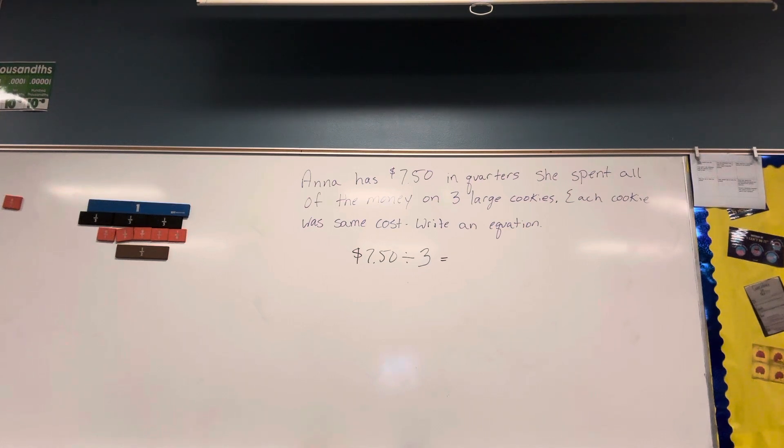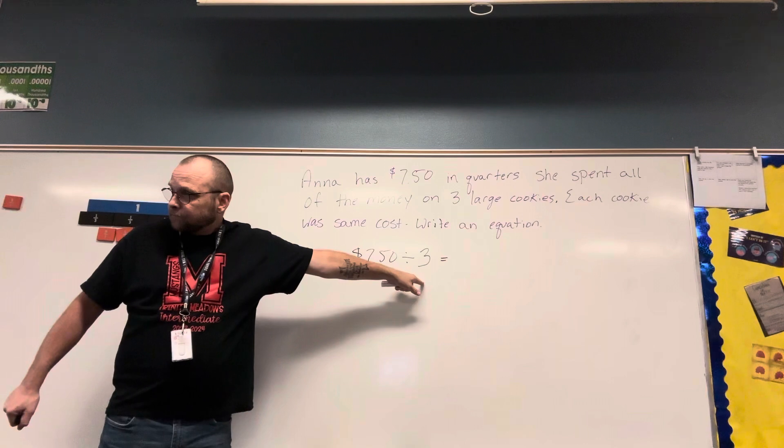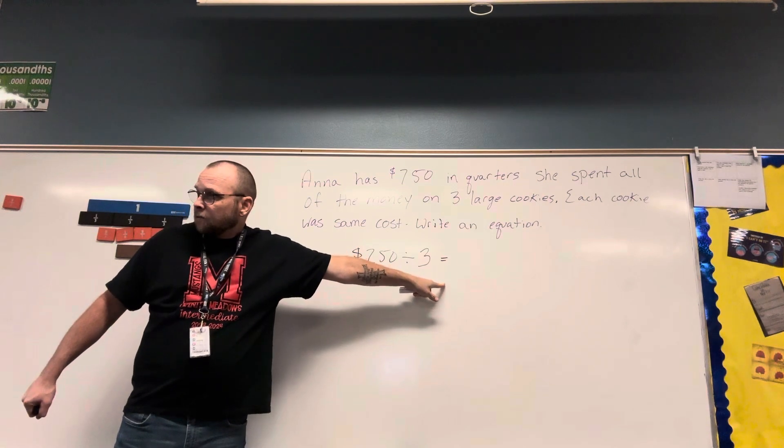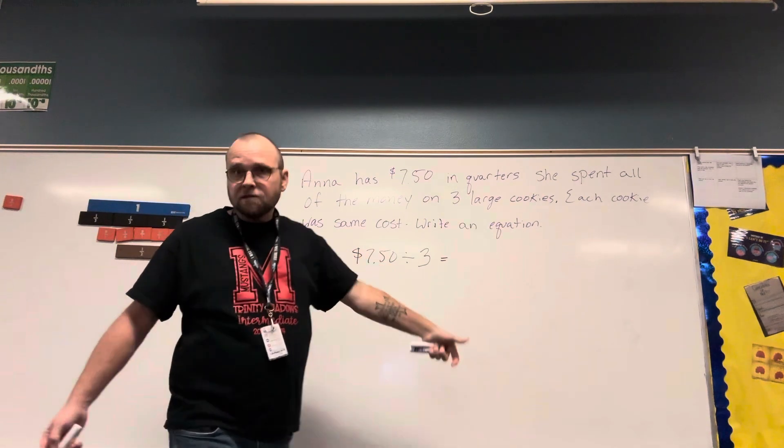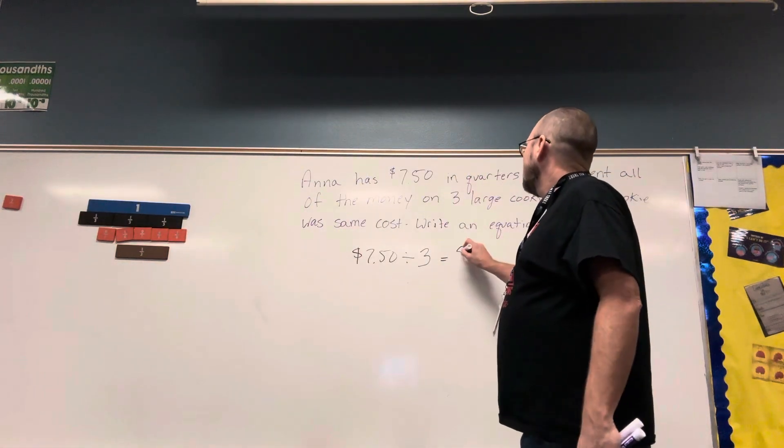We've eliminated three of them. Which one has $7.50 divided by three? D, which is how much does a cookie cost? Two dollars and fifty cents.